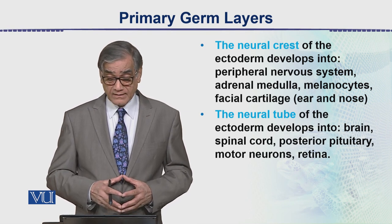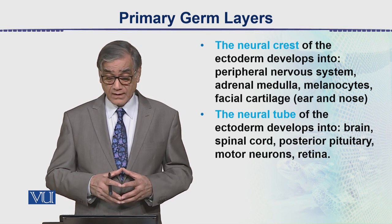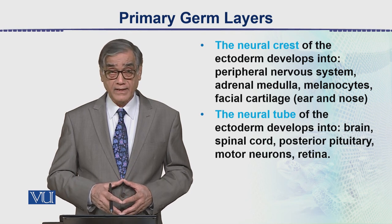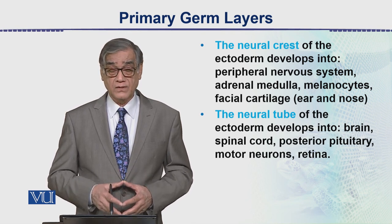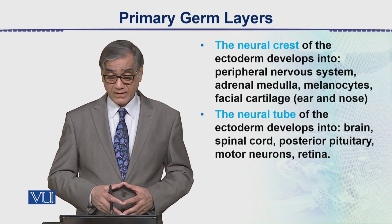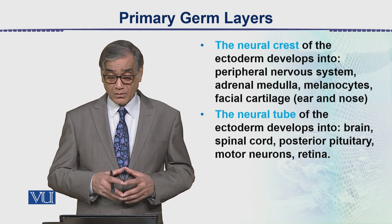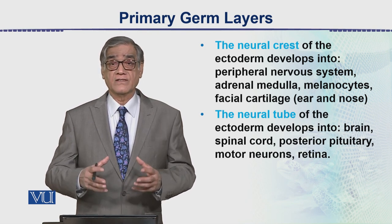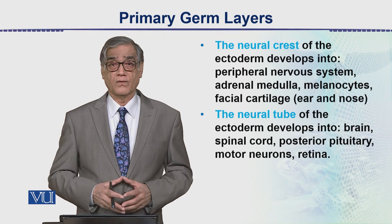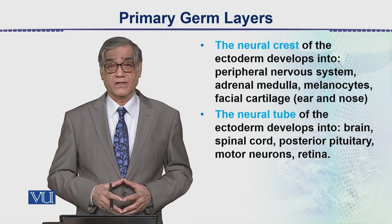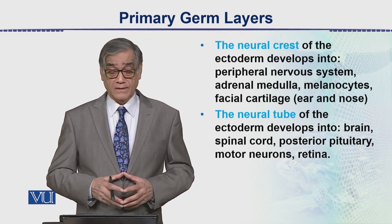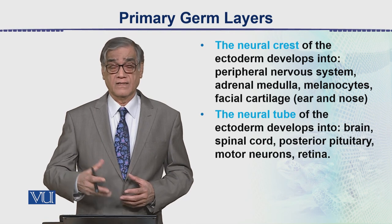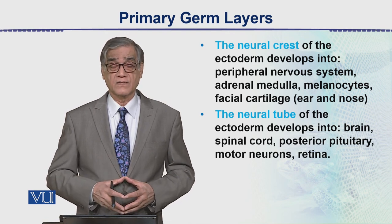The neural tube of the ectoderm develops into the brain, spinal cord, posterior pituitary, motor neurons, and retina. These are the different structures derived from the ectoderm, making it one of the primary germ layers.